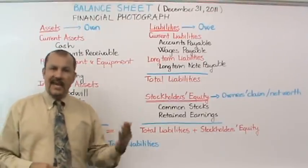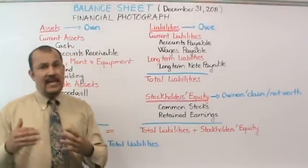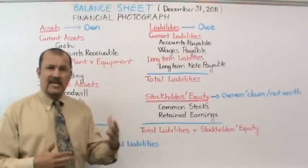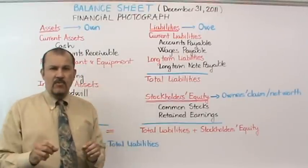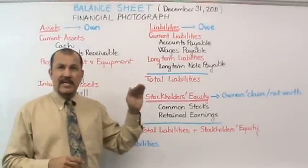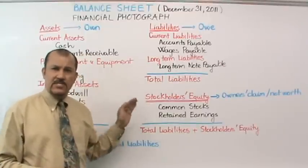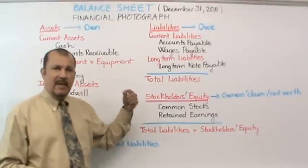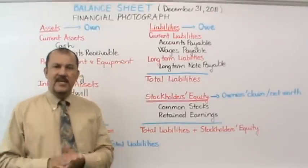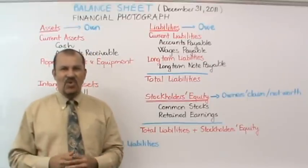That's an overview of the balance sheet containing the three broad sections: assets, liabilities, and equity. We've gone through the different subsections and accounts. One way to understand accounts is to think of assets, liabilities, and equity as families, with each account being a family member belonging to one of those three broad groups. With that, I'd like to sign off, and as I always say, we accountants work our assets off. Thank you.